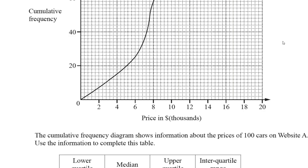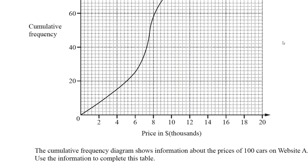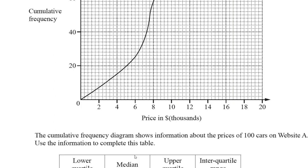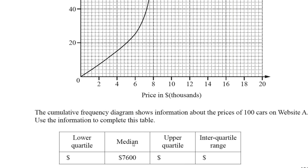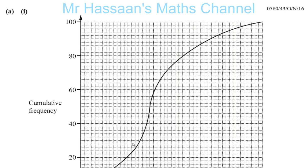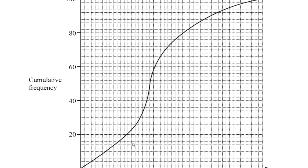The cumulative frequency diagram shows information about the prices of 100 cars on website A. Use the information to complete this table. They want you to find the lower quartile, the upper quartile, and the interquartile range. They already gave us the median. Now, what does that mean?